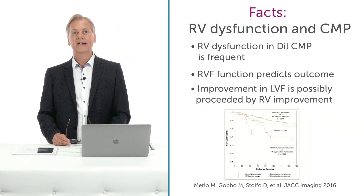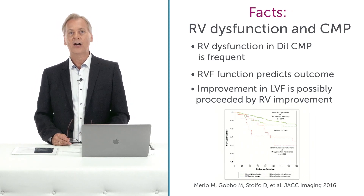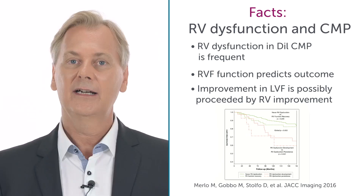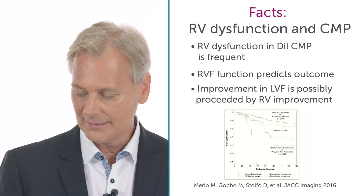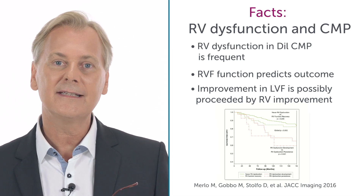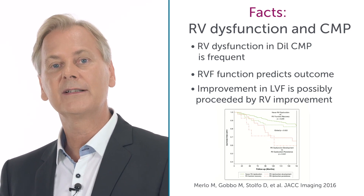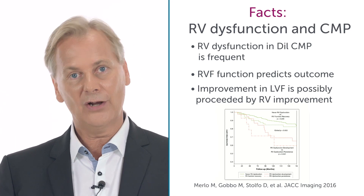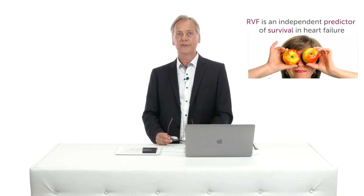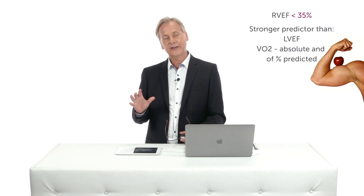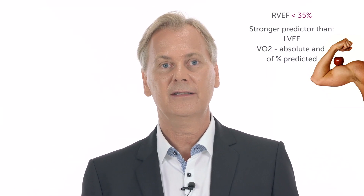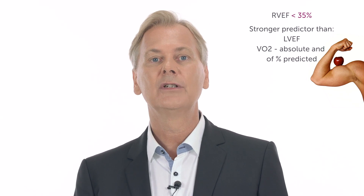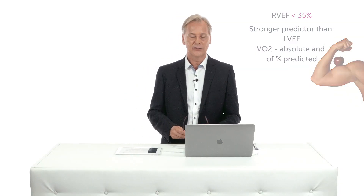What are some of the facts about right ventricle dysfunction in cardiomyopathy? RV dysfunction in dilated cardiomyopathy is frequent and predicts outcome. One other very important finding is that it actually precedes the improvement in left ventricle function if you initiate therapy, so observe the right ventricle closely in follow-up. Right ventricle function is an independent predictor of survival in heart failure. If you have a right ventricle ejection fraction below 35%, it's actually a stronger predictor than the ejection fraction of the left ventricle and even better than absolute VO2 or predicted VO2.